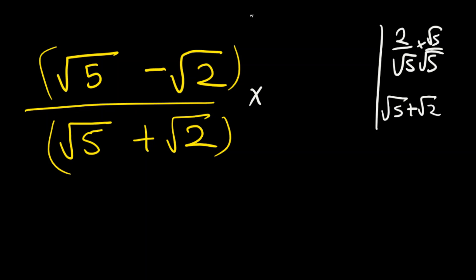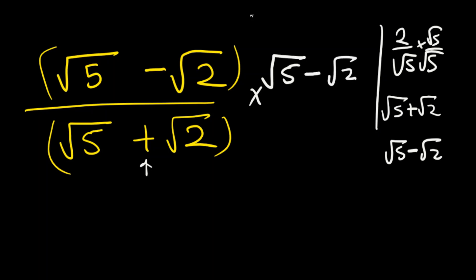Instead, you multiply by root of five minus root of two — the sign changes. So you write root of five minus root of two divided by root of five minus root of two. That's how you handle these: you change the sign — instead of positive it becomes negative, and if it's negative you put positive.